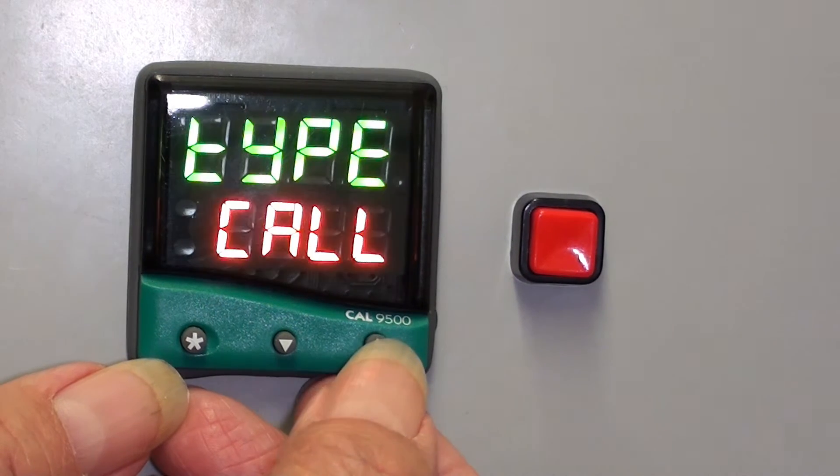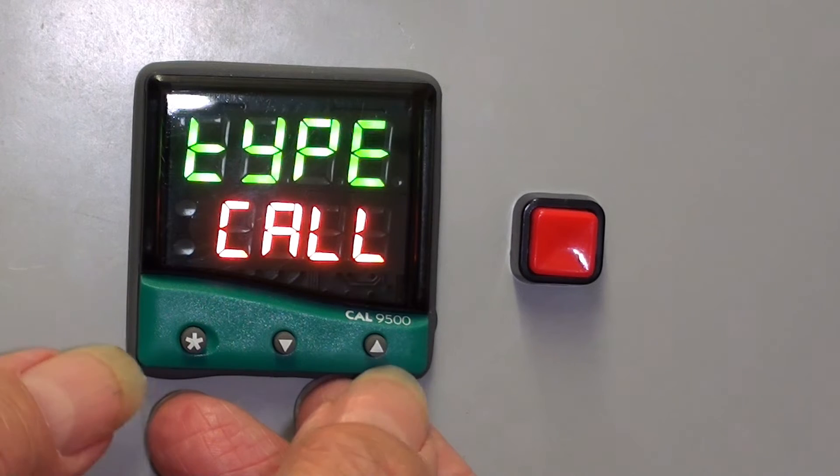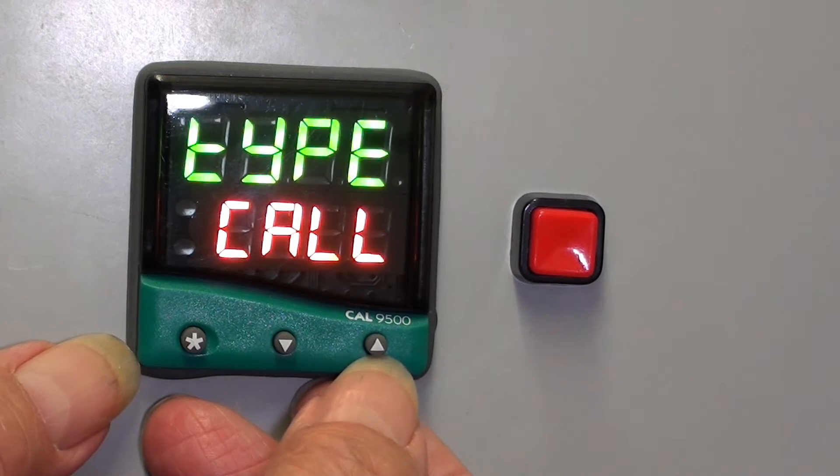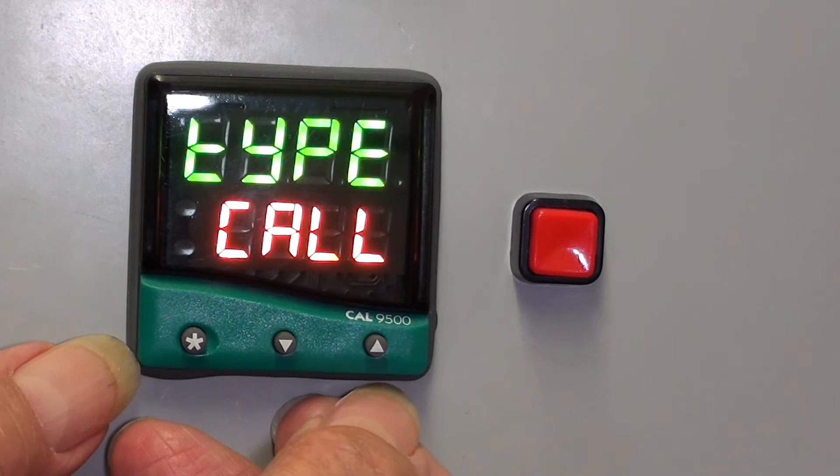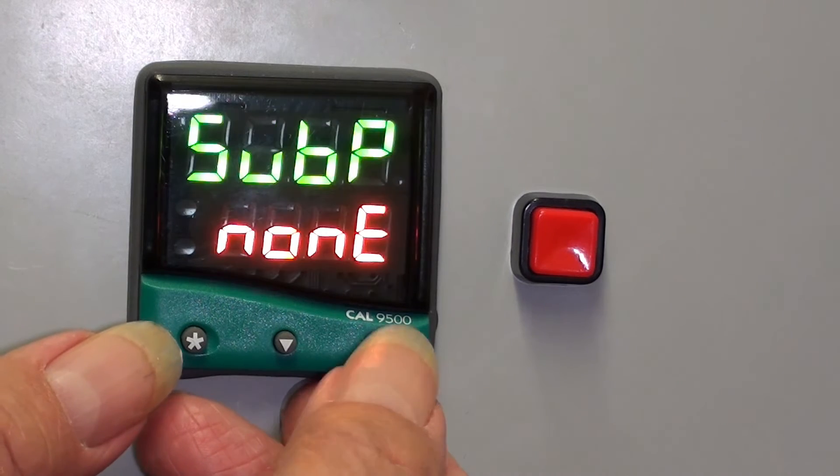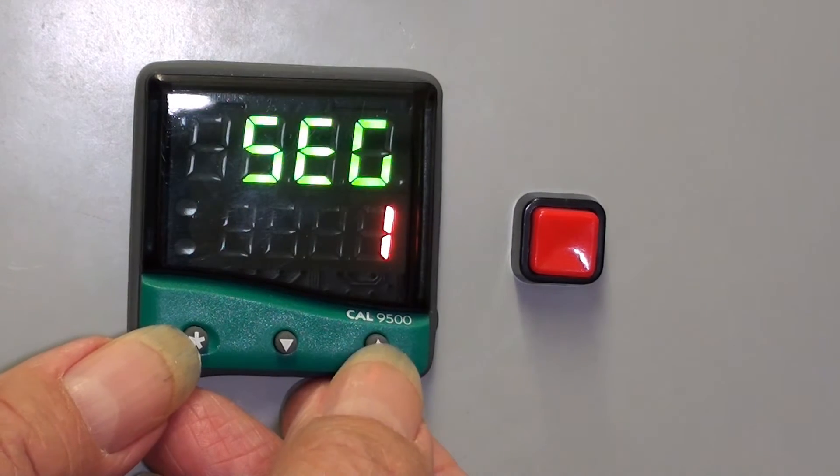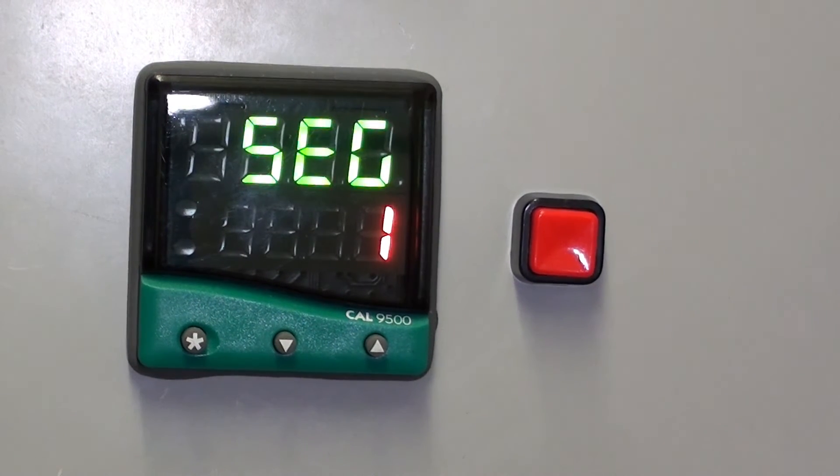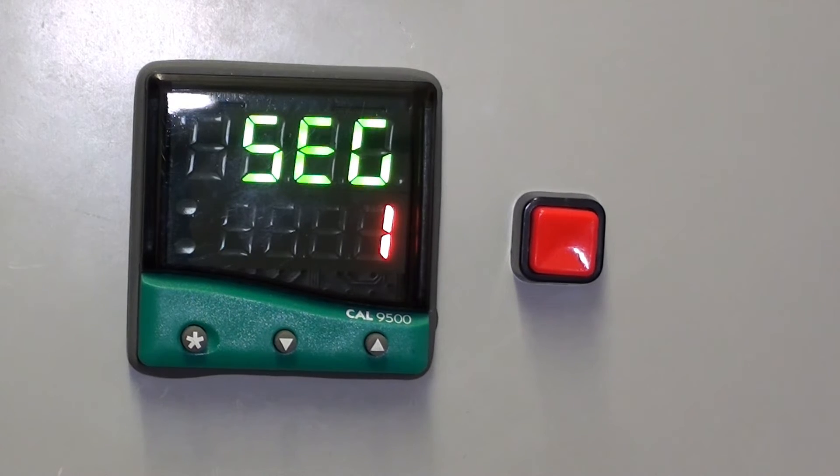We can set up the action to be a step, soak or dwell, or a ramp. We'll have a look at setting up a typical program, a typical profile.